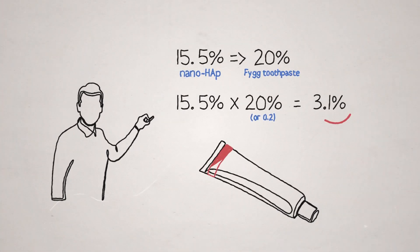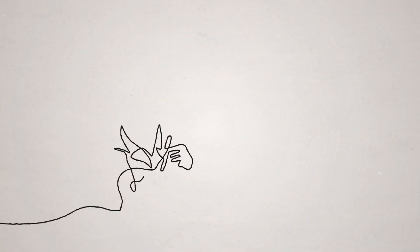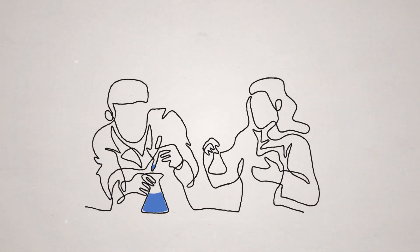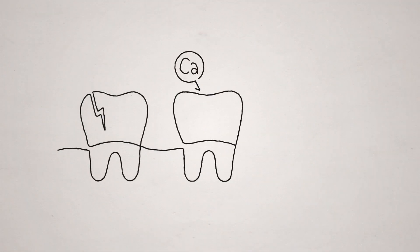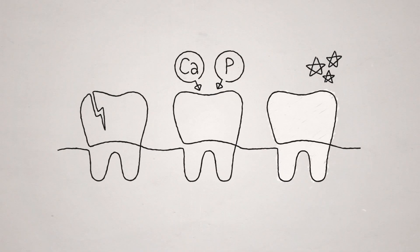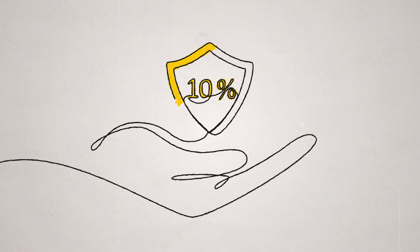our toothpaste contains 3.1% total nanohydroxyapatite and research is showing that a final nanohydroxyapatite range of 1 to 3% is optimal for sensitivity, remineralization, and whitening, with concentrations up to 10% being acceptable and within the safety standards.